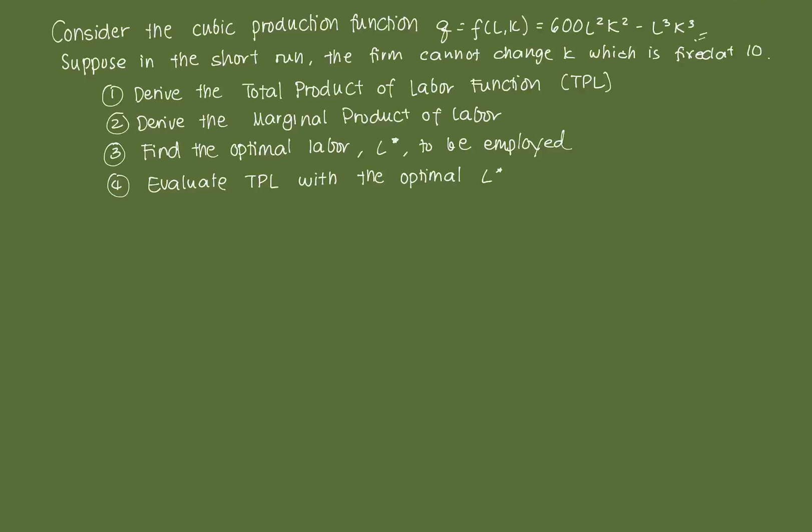We're given four tasks to do today. First, we need to derive the total product of labor function. Second, we need to derive the marginal product of labor. Third, we need to find the optimal labor, L-star, to be employed by the firm given the fixed input of capital. And fourth, we need to evaluate the total production of labor function with respect to the optimal L-star.